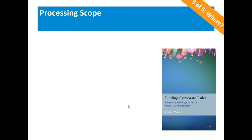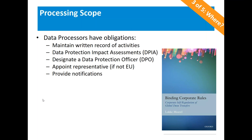The provisions on cross-border transfers also apply to controllers and processors — the new law extends outside the EU, especially affecting e-commerce companies and cloud-based businesses. For international transfers, organizations will need to consider options such as Privacy Shield, contractual clauses with an EU-based entity, binding corporate rules — a five-step process to establish a corporate rule between EU and non-EU entities — or derogations based on certain criteria. The creation and establishment of binding corporate rules will very likely present a big challenge for organizations in the early days of GDPR compliance.